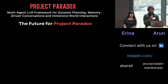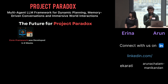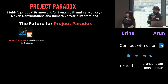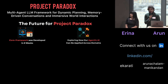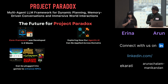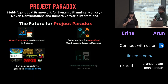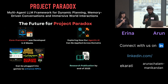Looking at the future for Project Paradox, we were able to build the core framework in just eight weeks. Looking forward, we want to explore how our agentic AI can be applied across domains. Game makers can currently enhance the NPCs in any game they'd like, and we're planning on publishing our research in a paper by the end of 2025.